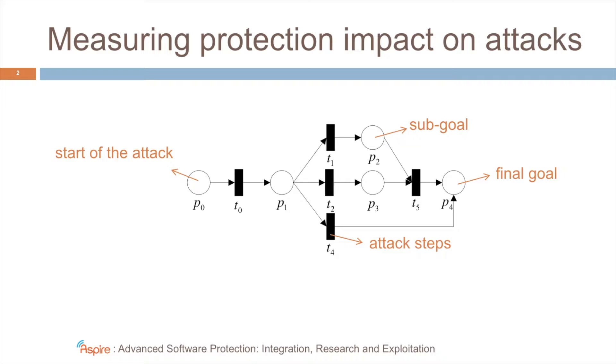Now we can build these Petri Net models of attacks, both on protected and on the original applications. And then we can try to estimate the effort for all attack paths and aggregate them somehow for a full attack. And then we can compare the effort that an attacker needs on the different versions of an application.